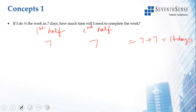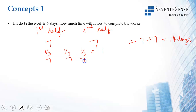If I do half the work in 7 days, I need 14 days total. If I do one third of the work in 7 days, I divide the work into three parts of one third each. I take 7 days for each third, so 7 plus 7 plus 7 equals 21 days to finish the work.